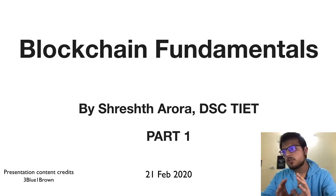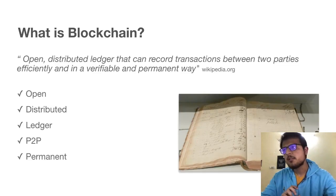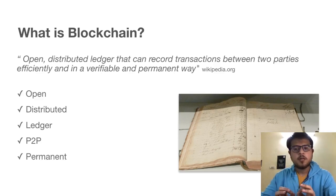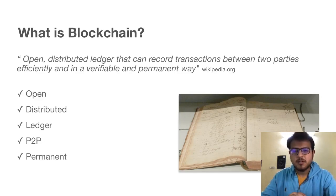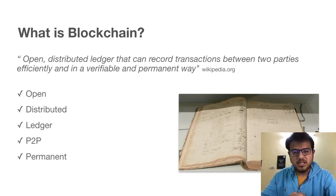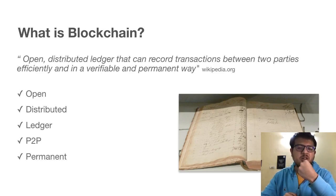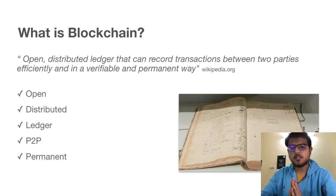I'd like to first start with: what is blockchain? It's an open distributed ledger that can record transactions between two parties efficiently and in a verifiable and permanent way. Well, that's Wikipedia — but does that make sense to you? What's open? What does it mean to be a distributed ledger? Or what does it mean to record transactions between two parties? Let's break it into simple parts.